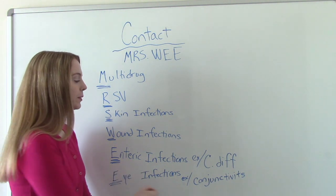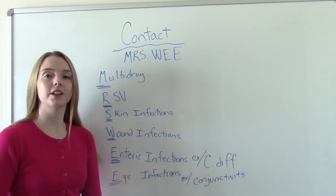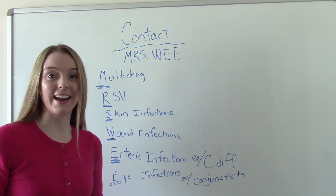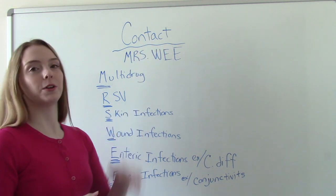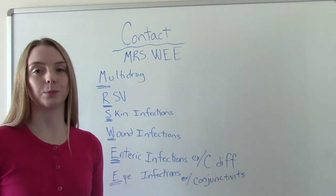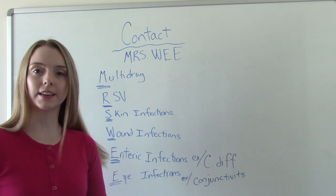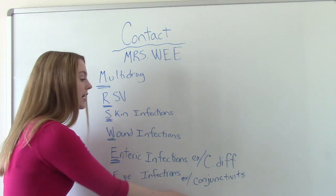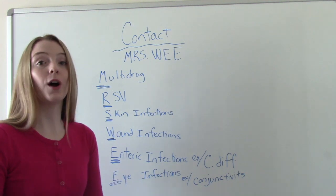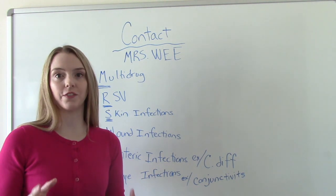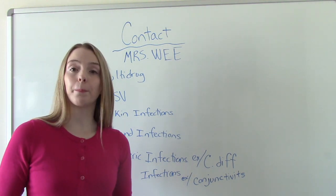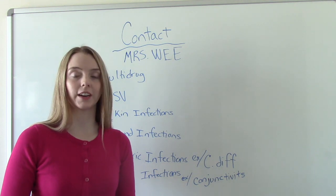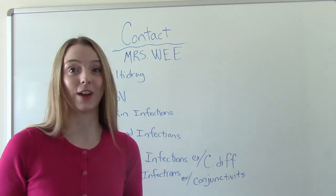E is for enteric infections. An example would be C. diff — Clostridium difficile. We don't want to spread that, so it's very important that we use proper contact isolation precautions when caring for patients with C. diff. And then finally, eye infections like conjunctivitis. Conjunctivitis is very contagious, so it's very important that we put these patients on contact isolation to prevent the spread of that infection.